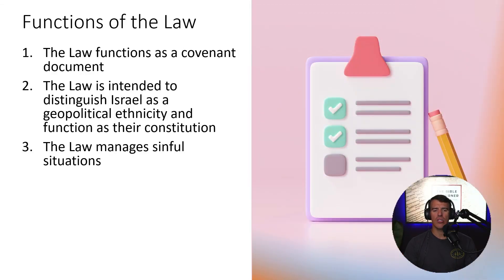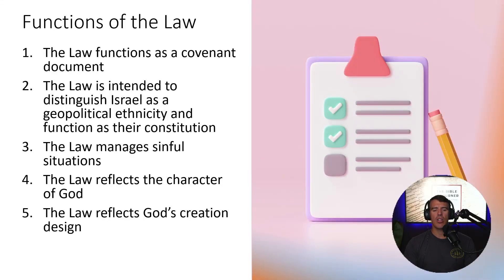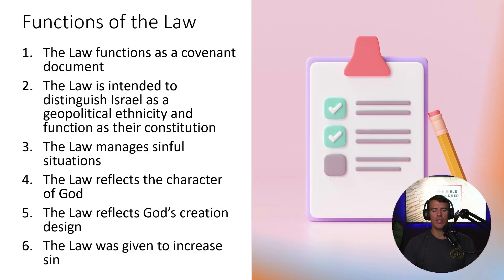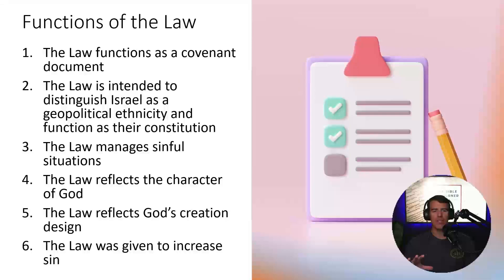Number four, the law reflects the character of God. Number five, the law reflects God's creation design — very practical and helpful. Number six, the law was given to increase sin. These six functions answer why the law was given. I won't say this is exhaustive, but these do a good job summarizing why the law exists for Israel in their place and time. Primarily we must understand it is a covenant document — that's what we need to talk about now.